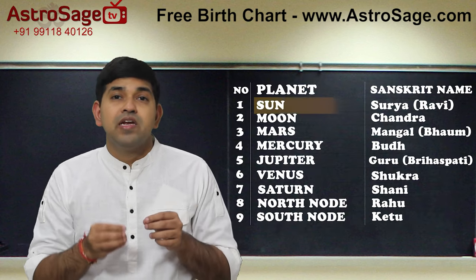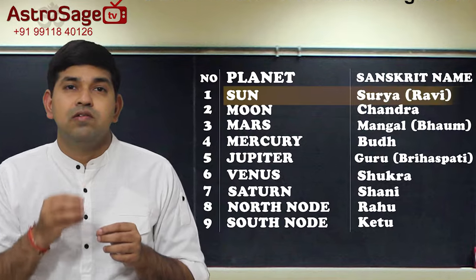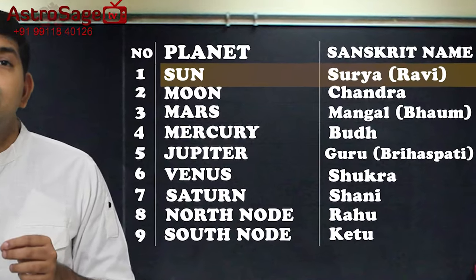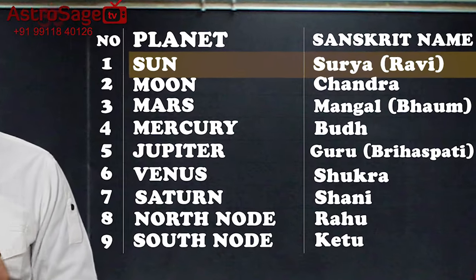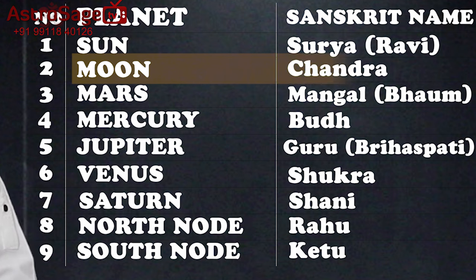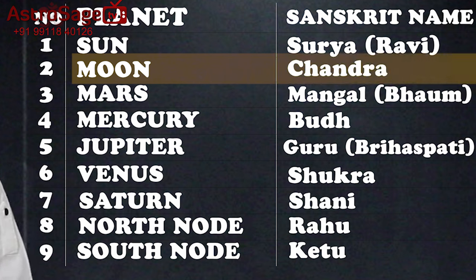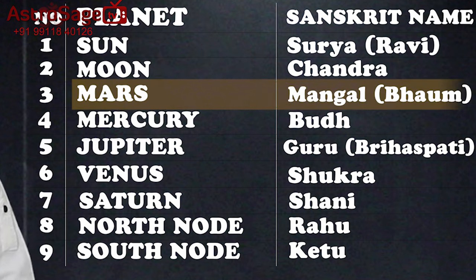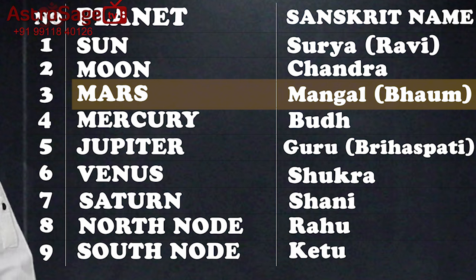The 1st planet is Sun, known as Surya or Ravi in Sanskrit. 2nd is Moon, known as Chandra in Sanskrit. 3rd is Mars, known as Mangal or Bhom in Sanskrit. In South India, it is also known as Koja.